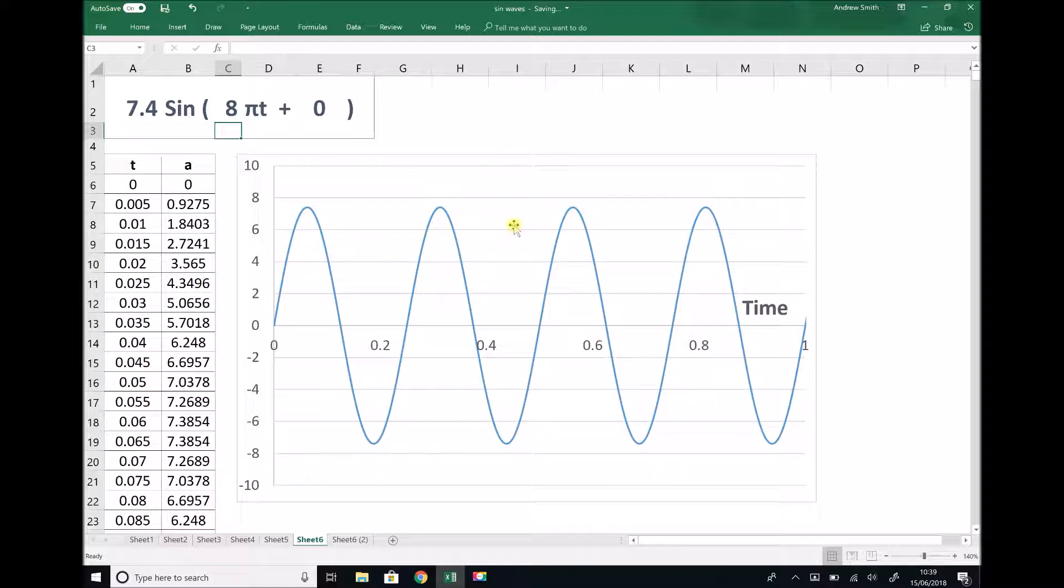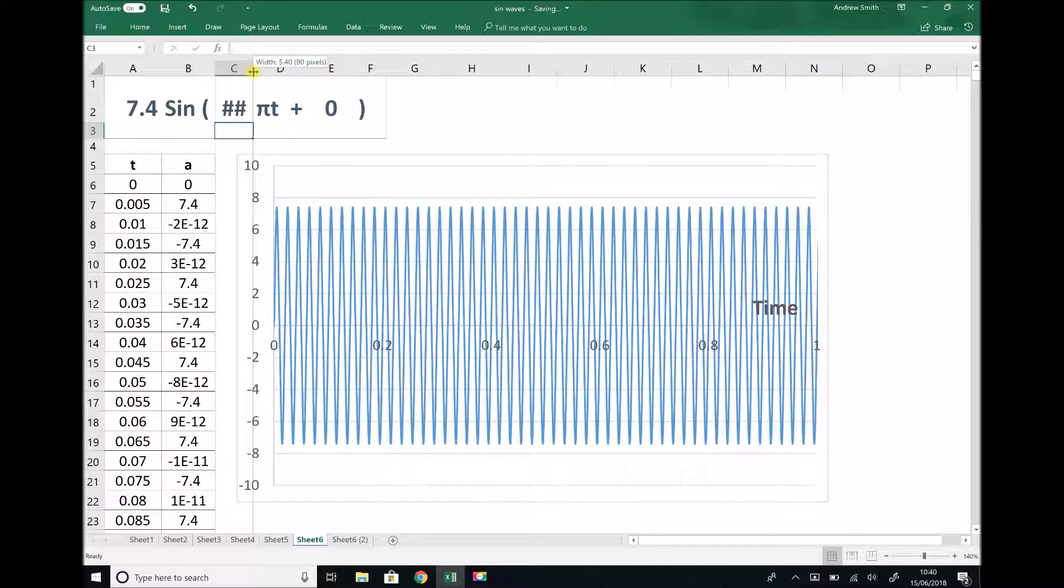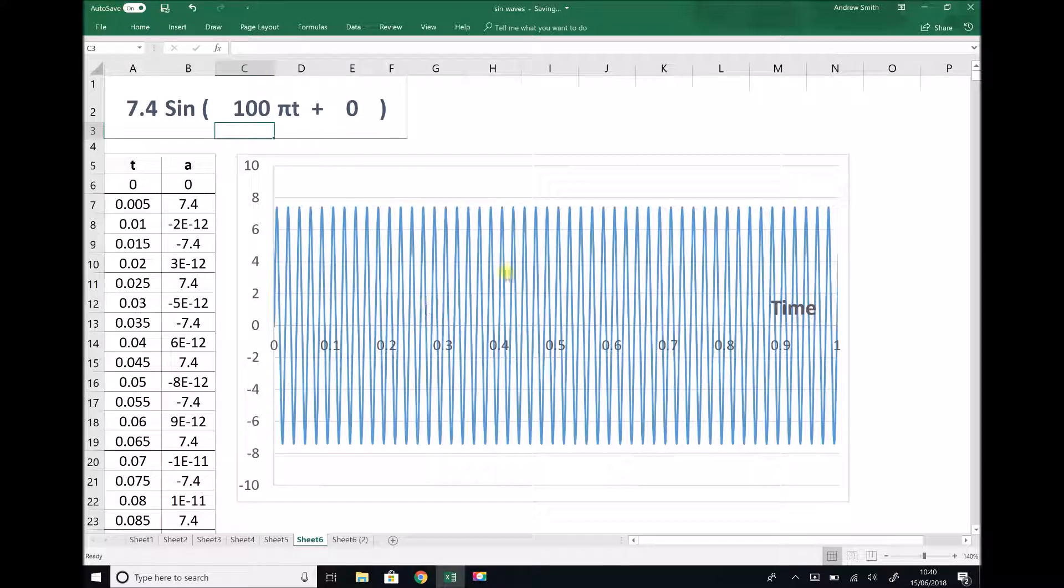And we can represent that easily using this model by changing the number in front of our πt to 100. So 100πt frequency will give us 50 oscillations per second. I'm not going to count them, you'll just have to take my word for it that there's 50 full oscillations there.